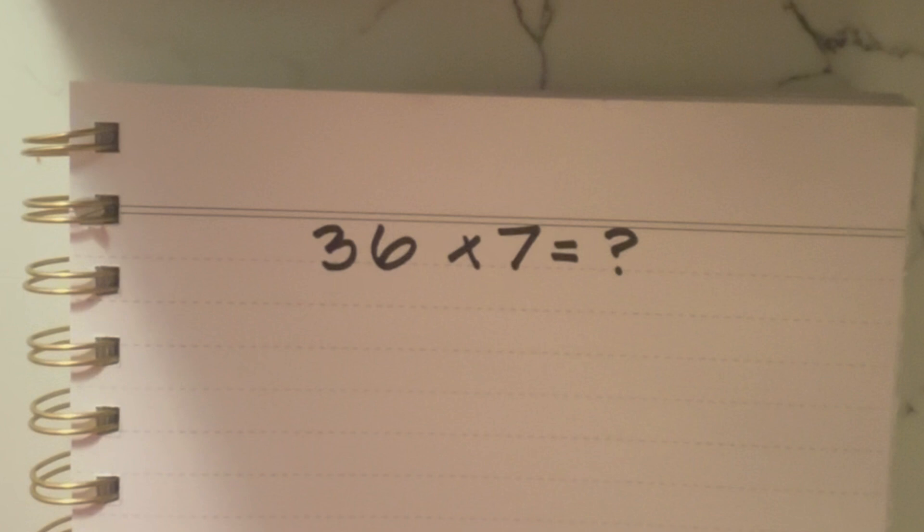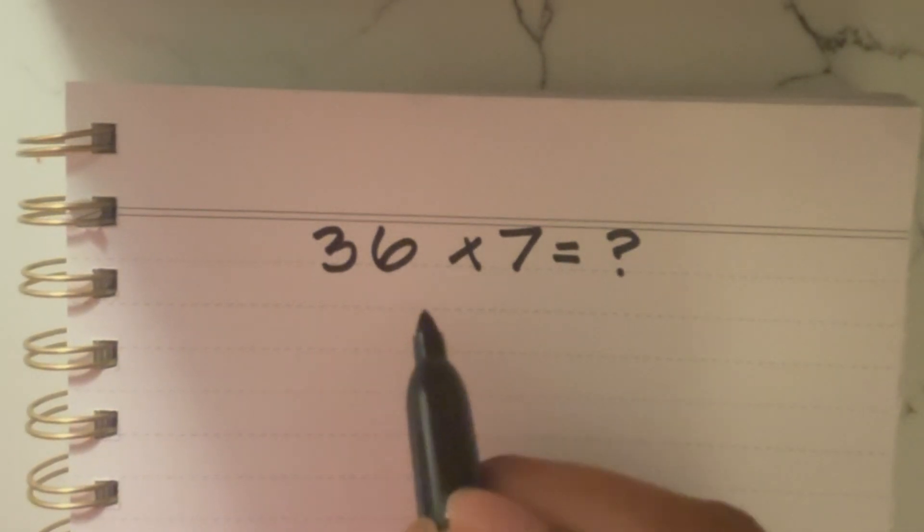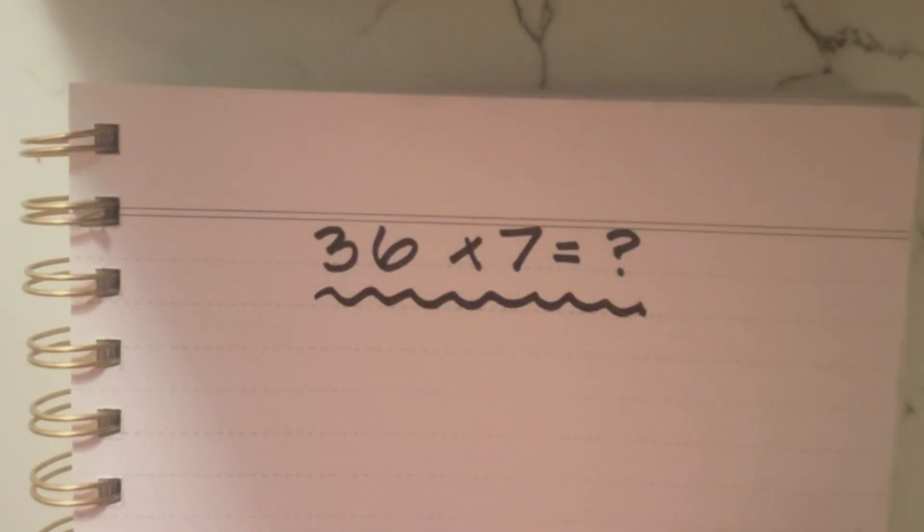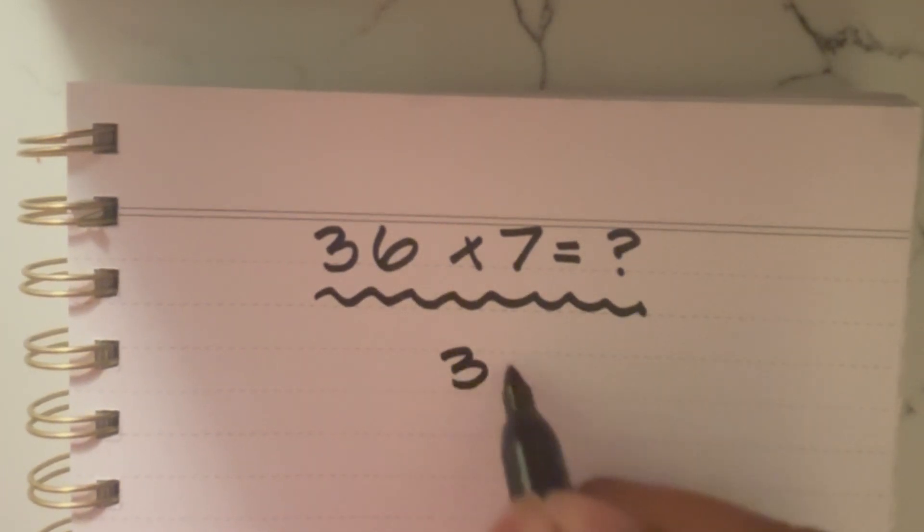We could either plug this into a calculator and solve it that way, or we could do some mental math and try to calculate this just as it is written. But another way we could solve this is by writing it in a different format where we have something that looks like this. I'll just draw a squiggly line. 36 times 7.